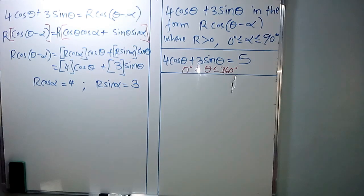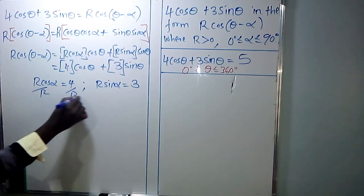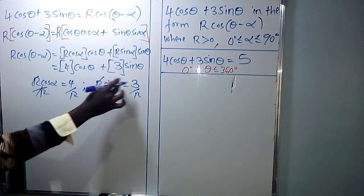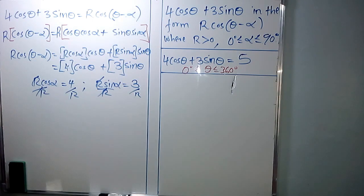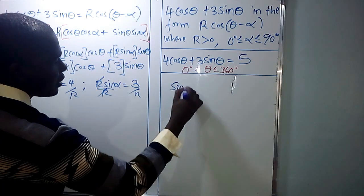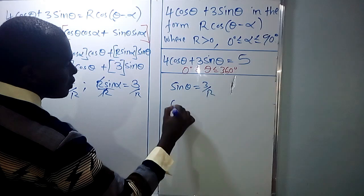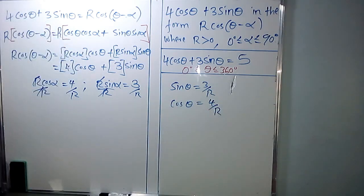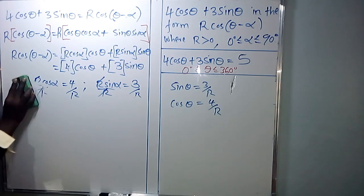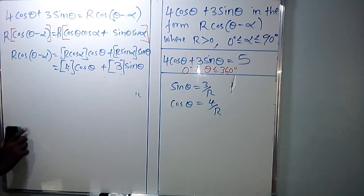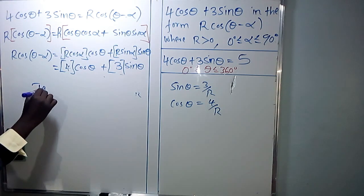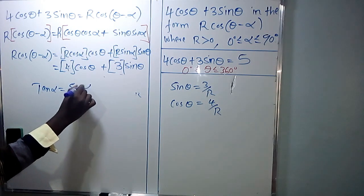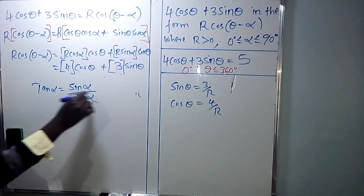If you divide both sides of the equations by R, you get sin alpha equals 3 over R and cos alpha equals 4 over R. From there we can now get tan alpha using cos alpha and sin alpha, since tan is sin over cos. So tan alpha will be sin alpha over cos alpha.